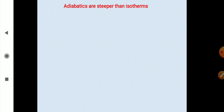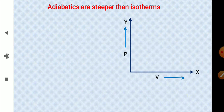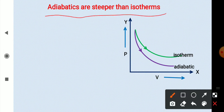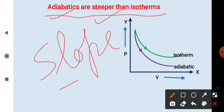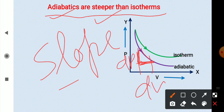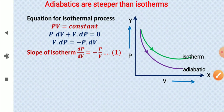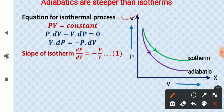Adiabatics are steeper than isotherms. Looking at the PV diagram with one adiabatic and one isotherm, the adiabatic has a greater slope. To prove this, we need to find the slope dp/dv — which is the change in pressure over the change in volume — for both the isotherm and the adiabatic.